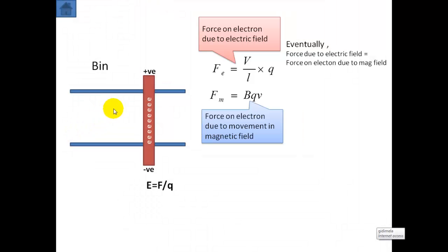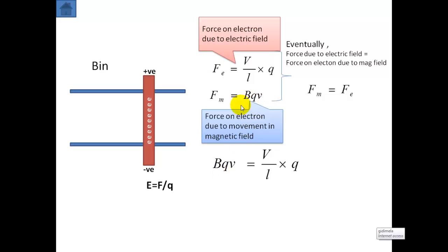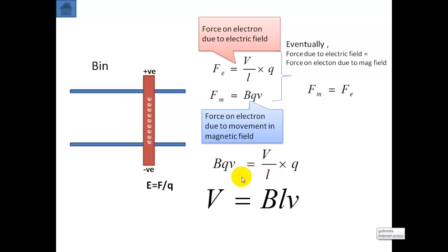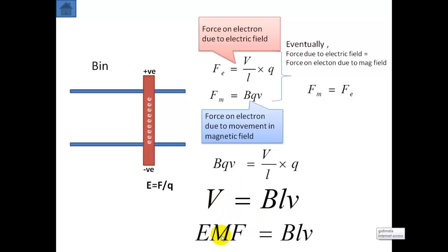Eventually, once we reach equilibrium, these forces will be equal. The force due to movement in the magnetic field will equal the force due to the electric field that has been established. So BQV equals VQ over L. We can simplify: take the L over to one side and cancel the Q's from both sides. That gives us V equals BLV. This is the derivation you need to be able to do. V is the potential difference — in other words, this is the EMF. The induced EMF equals BLV, where B is the magnetic field strength, L is the length of the conducting bar, and V is the velocity at which it travels in the magnetic field.